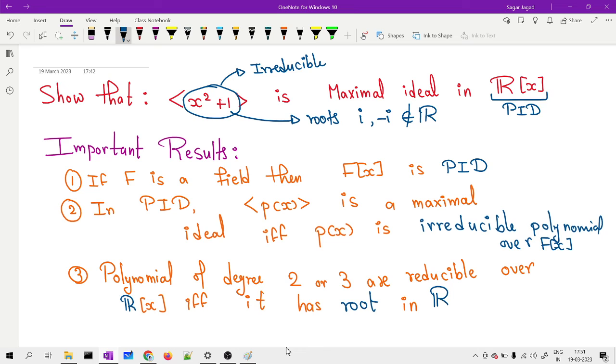I gave you the results which will help you prove many similar examples. Since it is a polynomial of degree 2, it is reducible only if it has a root inside ℝ, but the only roots are i and -i (iota), which are inside complex numbers, not inside real numbers. So it is not reducible, hence it becomes irreducible. Therefore the given ideal is a maximal ideal.